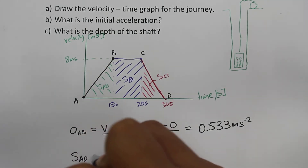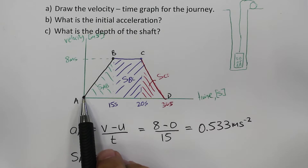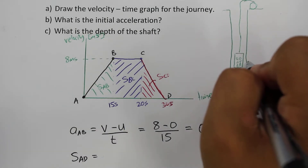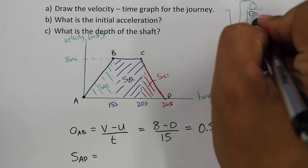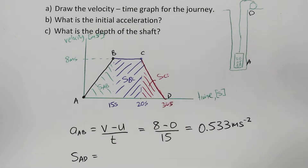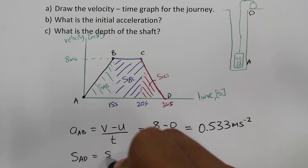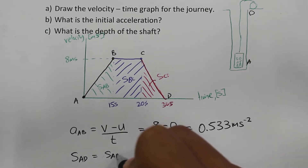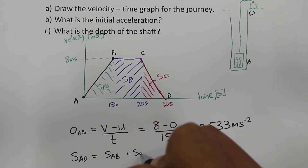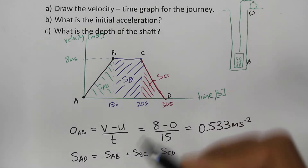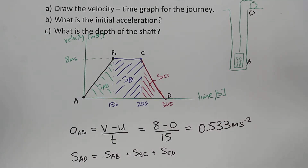So S_AD, the total distance from point A at the bottom to point D at the top of the shaft, equals S_AB plus S_BC plus S_CD.